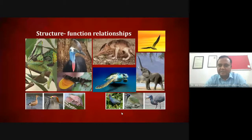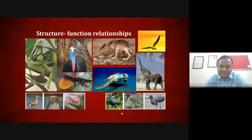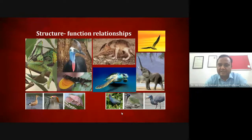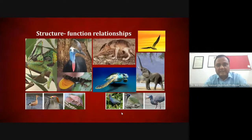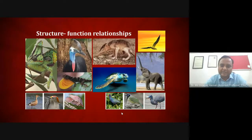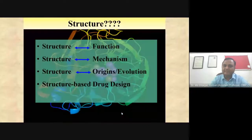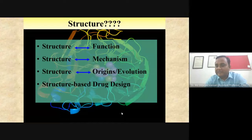In nature, every animal has a particular structure to survive in a certain environment. The same applies to proteins — each defined function requires a particular structure, and a slight change leads to dramatic change in conformation and function. For example, a mutation in a gene can change protein conformation and cause disease. By seeing the structure, you can understand function, elucidate the mechanism of action, understand the origin and evolution of the protein, and integrate structure information for the design and development of drug molecules.